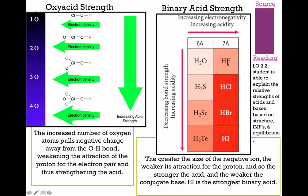For binary acids — just two atoms like HF, HCl, HBr — the stronger the bond, the weaker the acid, because you want the H to be removed easily. Iodine is really big, so its nucleus doesn't hold onto the hydrogen as strongly as fluorine. Fluorine is much smaller, so its nucleus is more attracted to the hydrogen, making it harder to remove. As you decrease bond strength, you increase acidity.